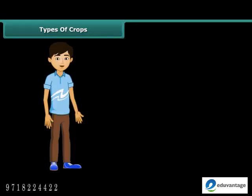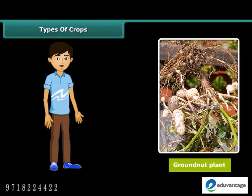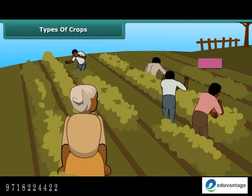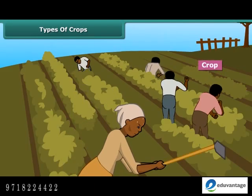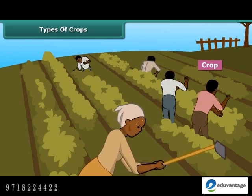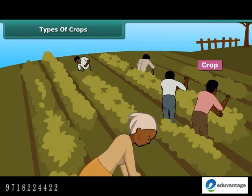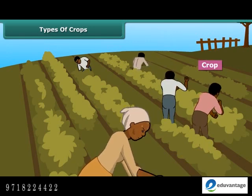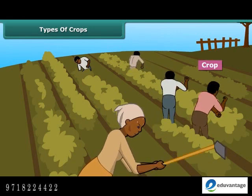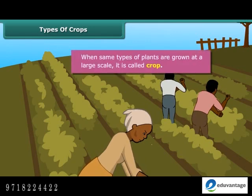Friends, have you ever looked at a groundnut plant? Can we call it a crop? No, we cannot. When same types of plants are grown at a large scale, then it is called a crop.